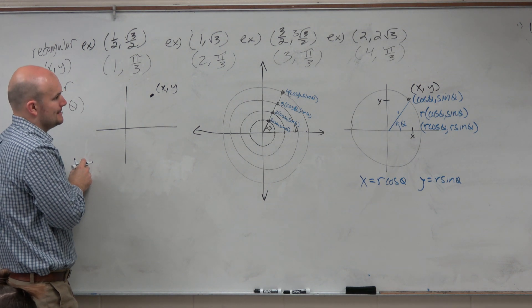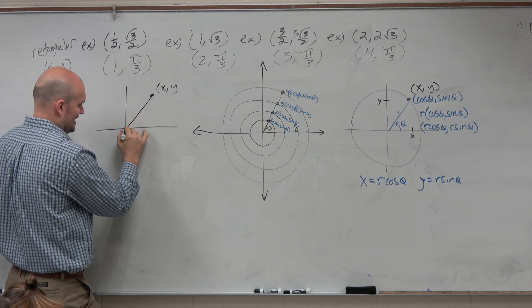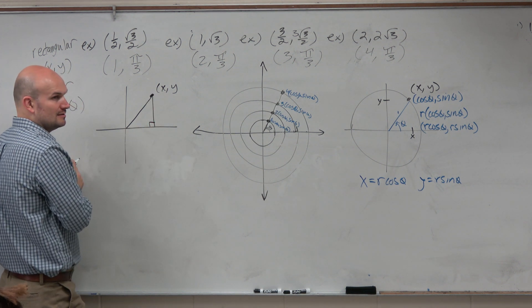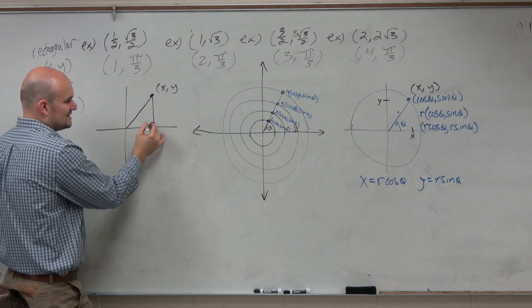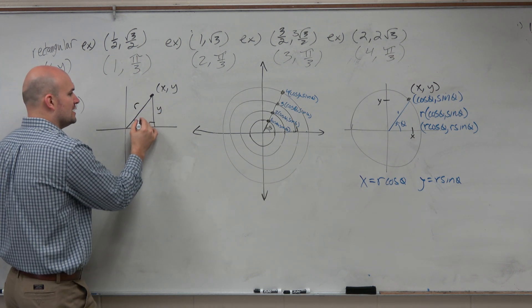Draw that in polar form. Well, you can create a right triangle perpendicular to the x-axis. Then you know this is x and this is y. Do you have enough information to find r and theta?